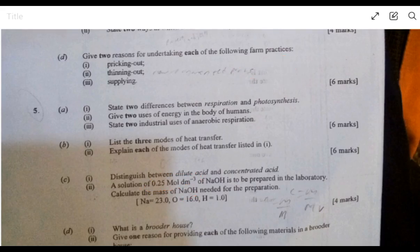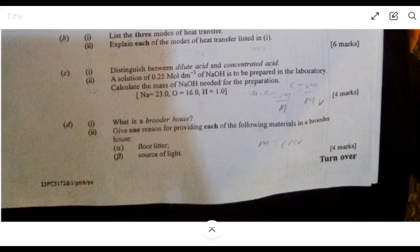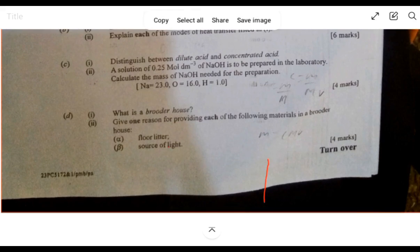The next question has to do with brooder houses. A brooder house is for chicks, to brood them to become old. Give one reason for providing the following materials in the brooder house. The floor litter is there to prevent the brooder house from being soiled. The floor litter traps the feces of the chicks so that in case the place has a very unpleasant smell, the poultry farmer can just sweep everything out and then replace. The source of light serves as heat to the chicks.